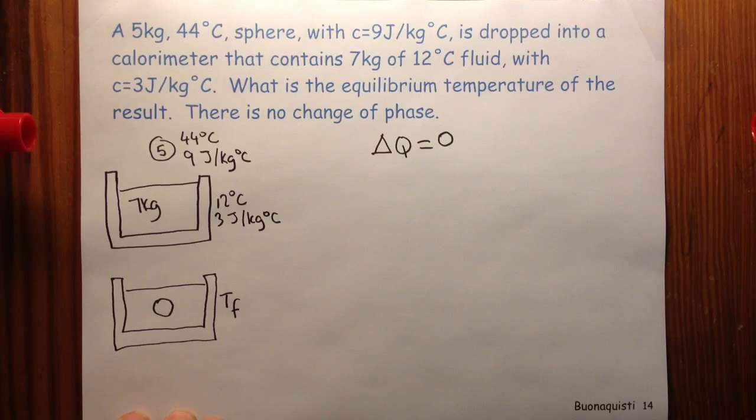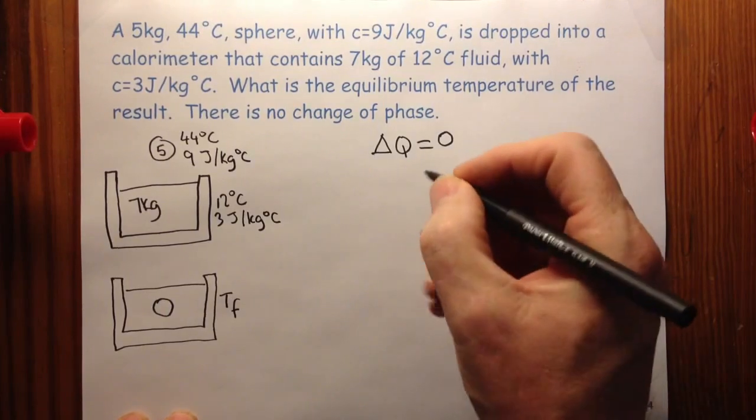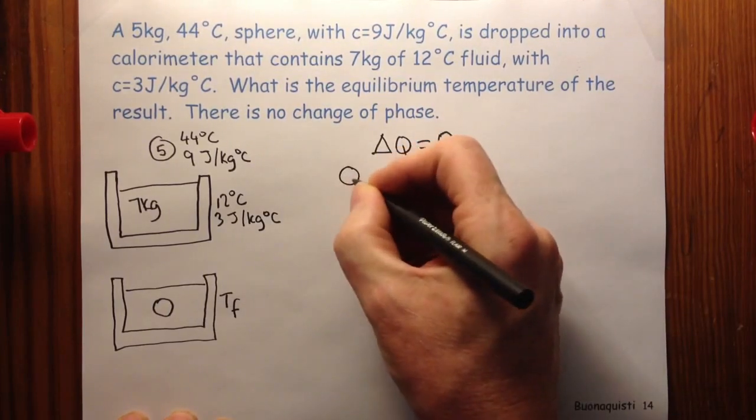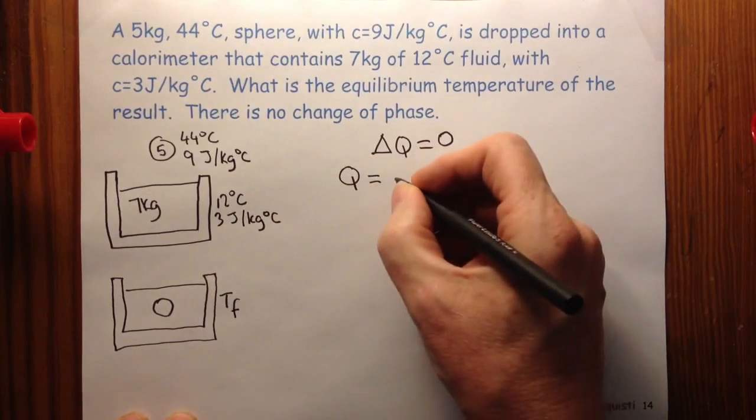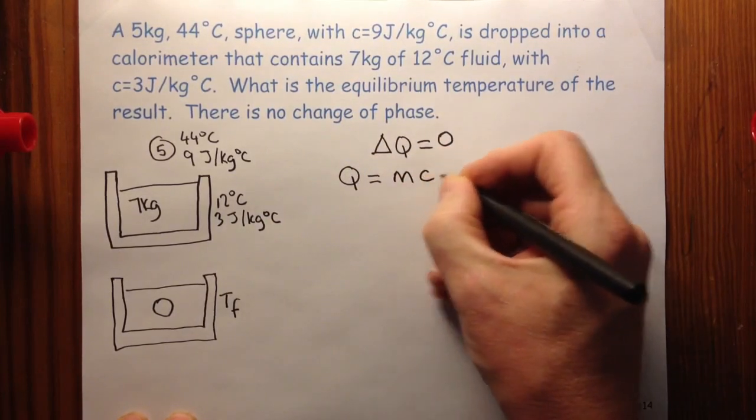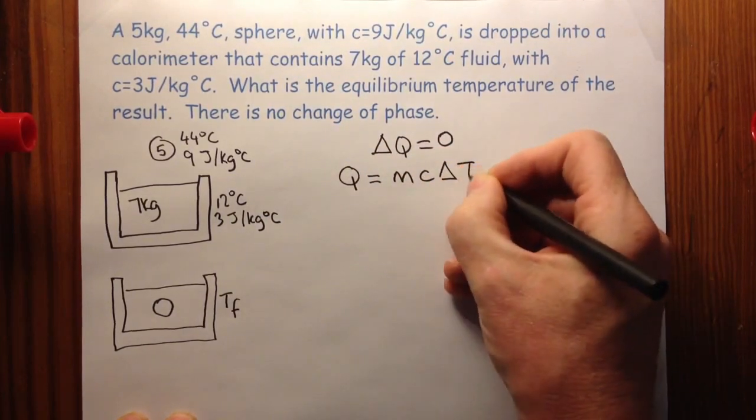There's no heat escaping to the outside world and there's no heat entering from the outside world. And we remember that our relationship between heat and these parameters is heat is equal to mass times the specific heat times the temperature change.